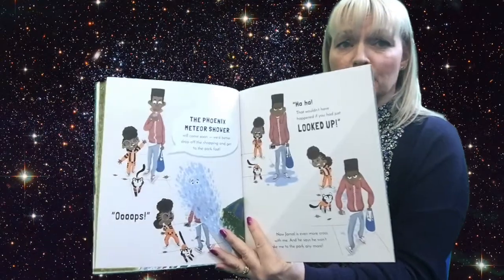Now Jamal is even more cross with me. And he says he won't take me to the park anymore. But when we get home, Mum saves the day. Come on Jamal, she says. Put that phone down and take your little sister to the park. Yes.